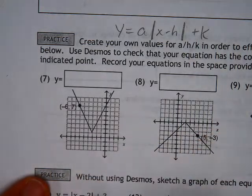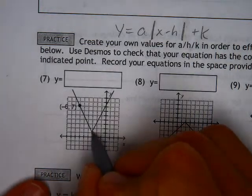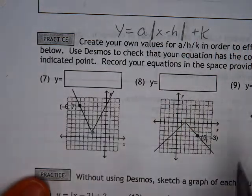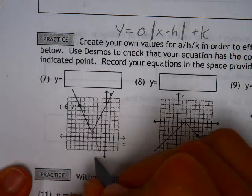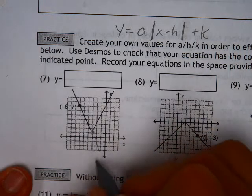The absolute value function creates a V-shape where we have a point given at a certain location. We see that point there. We've identified that point as the vertex, and that vertex in this case here is negative 1, 2, 3, and then up 1.